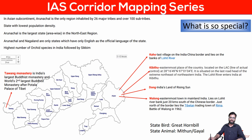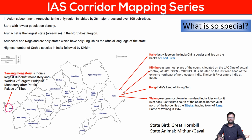Tawang is famous because it is related to Tibetan culture. There is a monastery there — whenever India's Home Minister or anyone visits Tawang, China issues an advisory. China has occupied Tibet, so having Tawang remain part of India is a problem for them. Tawang Monastery is India's largest Buddhist monastery, and it is also the world's second largest Buddhist monastery after Tibet's Potala Palace — that is why it is so important.